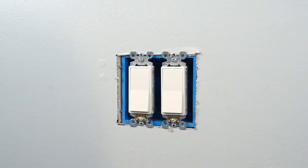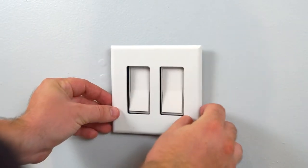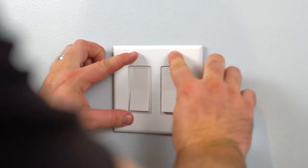To install the double gang, align the two bottom prongs while aligning the top and slowly and firmly press on.